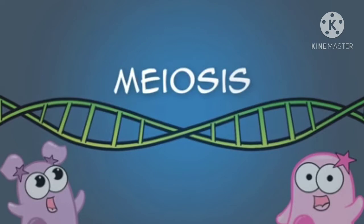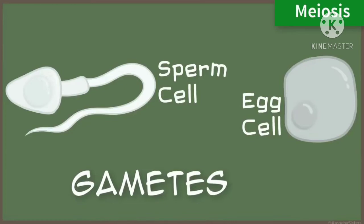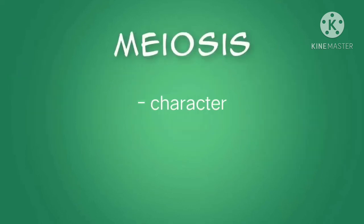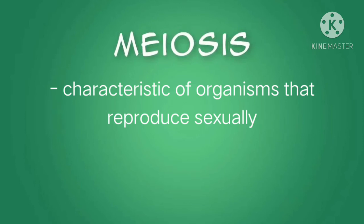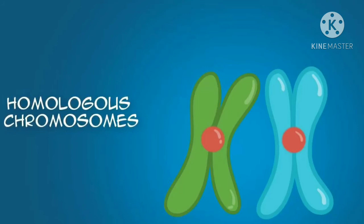Meiosis, also called reduction division, involves two fissions of the nucleus, giving rise to four gametes or sex cells, each possessing half the number of chromosomes of the original cell. Meiosis is characteristic of organisms that reproduce sexually. Such species have in the nucleus of each cell a diploid, or double, set of chromosomes consisting of two haploid sets — one inherited from each parent. These haploid sets are homologous: they contain the same kinds of genes, but not necessarily in the same form.